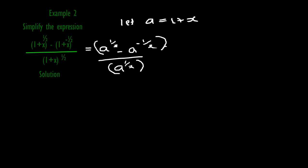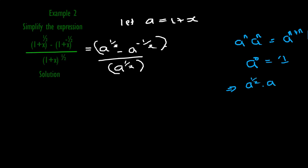In the numerator we have a raised to power half minus a raised to negative half, and in the denominator we have a raised to power half. From the laws of indices, when you have the same base you add the powers. Any number raised to power zero is 1.